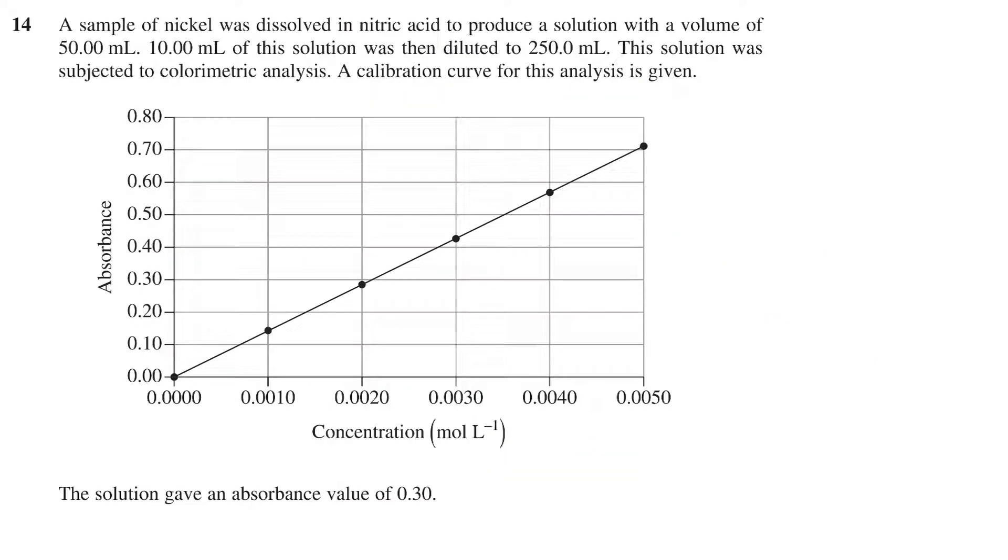The question states: a sample of nickel was dissolved in nitric acid to produce a solution with a volume of 15 milliliters. 10 milliliters of the solution was then diluted to 250 milliliters. This solution was subject to colorimetric analysis. A calibration curve for this analysis is given.